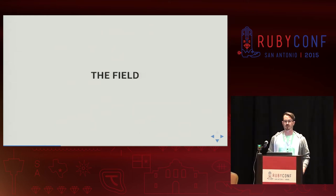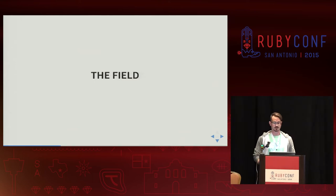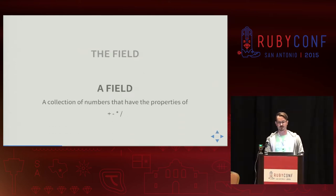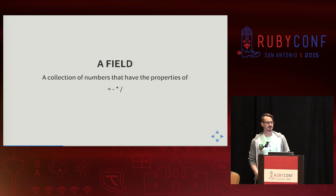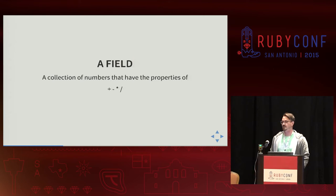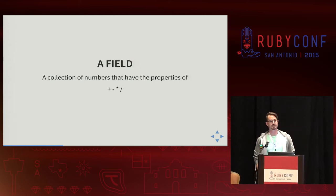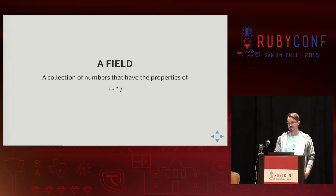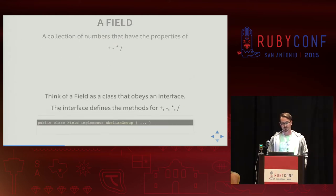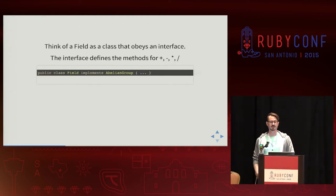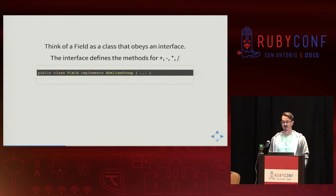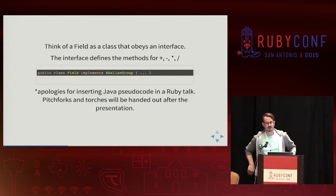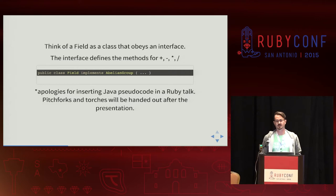So those are applications of matrices and vectors. Let's get into some more mathematical concepts around this and talk about fields. A field is a collection of numbers that have the properties of addition, subtraction, multiplication, and division. You can think of a field as a class that obeys an interface — the interface defines methods for addition, subtraction, multiplication, and division.